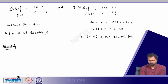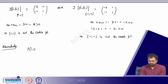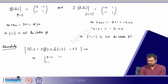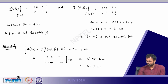For the Jacobian at (1,1), the characteristic equation gives (3 − λ)(1 − λ) − (−1)(−1) = 0, which simplifies to λ² − 4λ + 2 = 0. Therefore λ = 2 ± √2.